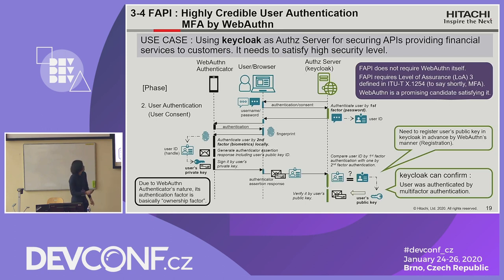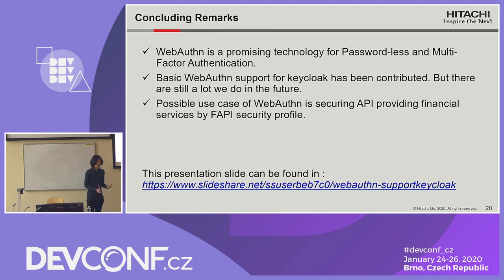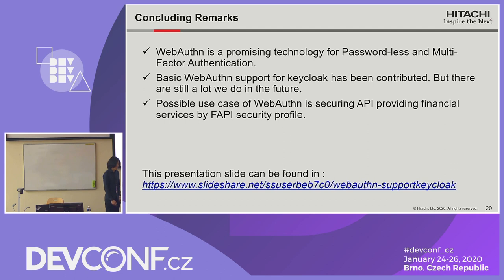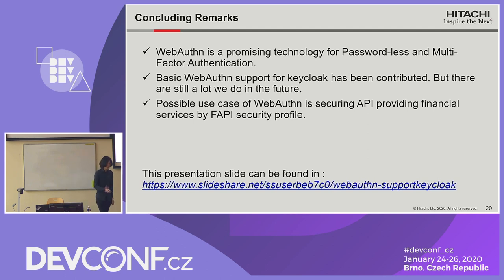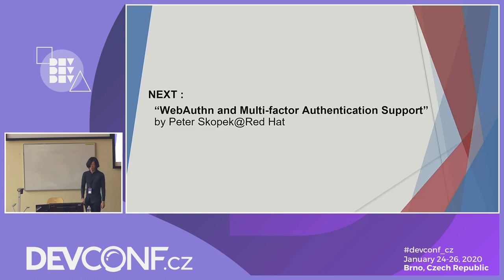Today I explained WebAuthn — a promising technology for passwordless and multi-factor authentication. The current Keycloak has already supported basic WebAuthn, but there is still a lot we can do in the future. I also picked up one use case about Keycloak supporting WebAuthn in the real world: security for APIs providing financial services, which requires high-level security. That's all for my talk. Thank you very much for listening. The next half is WebAuthn multi-factor authentication support by PeraSpec.